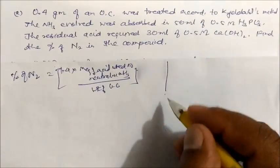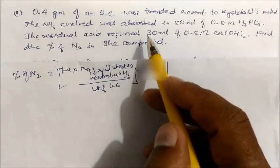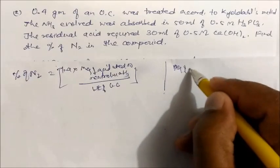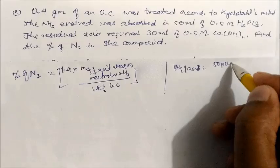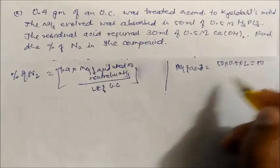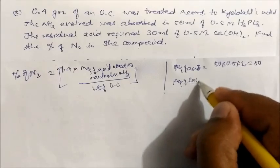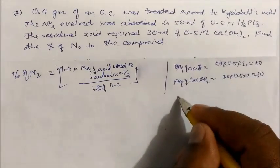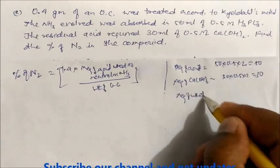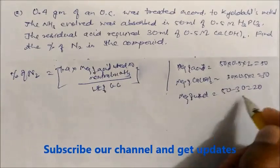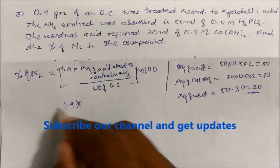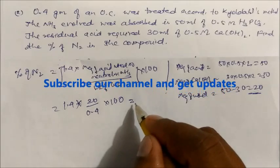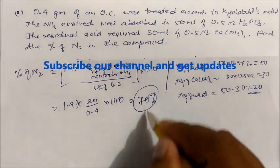H₃PO₃ is a dibasic acid, so its n-factor is 2. Milliequivalents of acid = 50 × 0.5 × 2 = 50. For calcium hydroxide: milliequivalents = 30 × 0.5 × 2 = 30. Milliequivalents of acid used to neutralize ammonia = 50 − 30 = 20. Substituting: 1.4 × 20 ÷ 0.4 × 100. On solving, you get 70%. This is our answer.